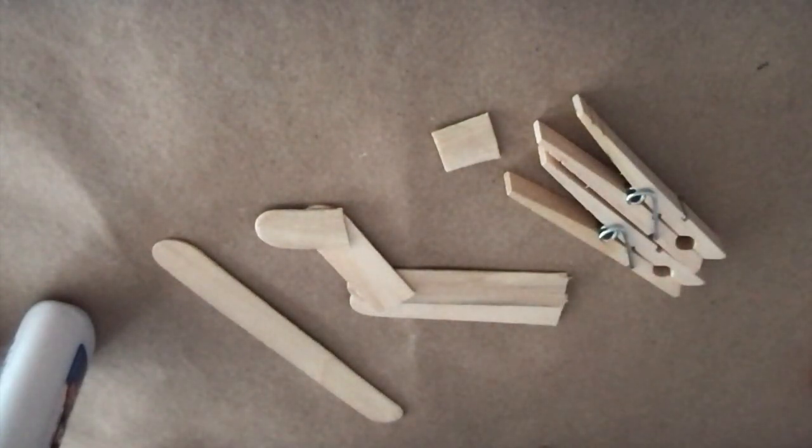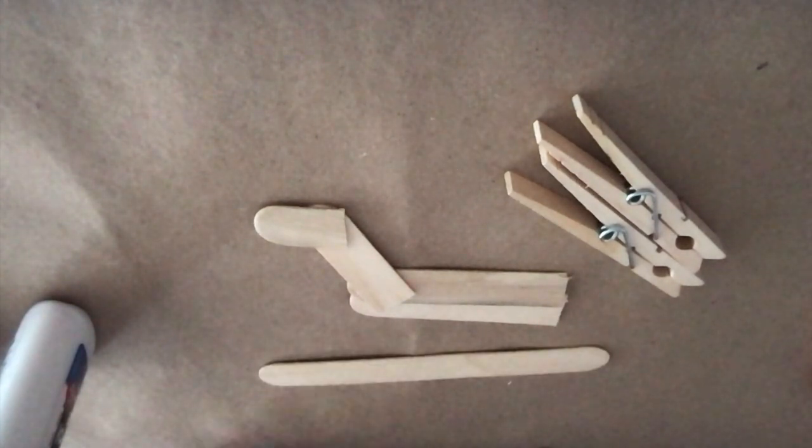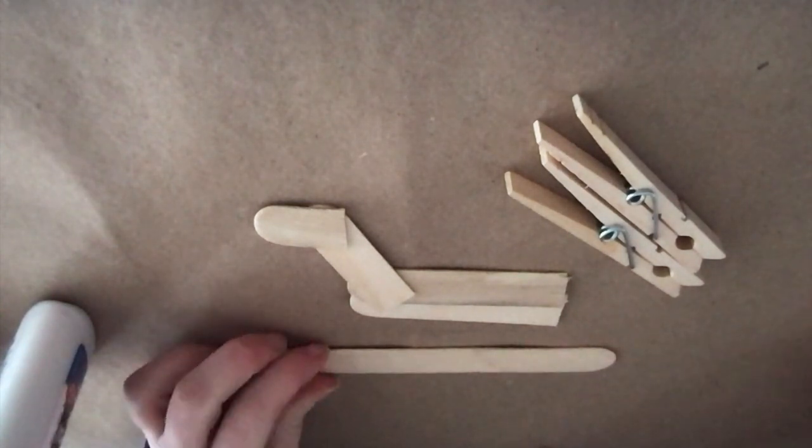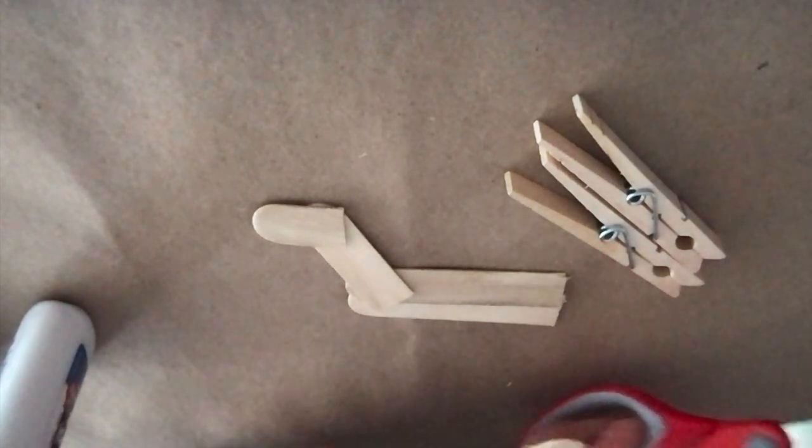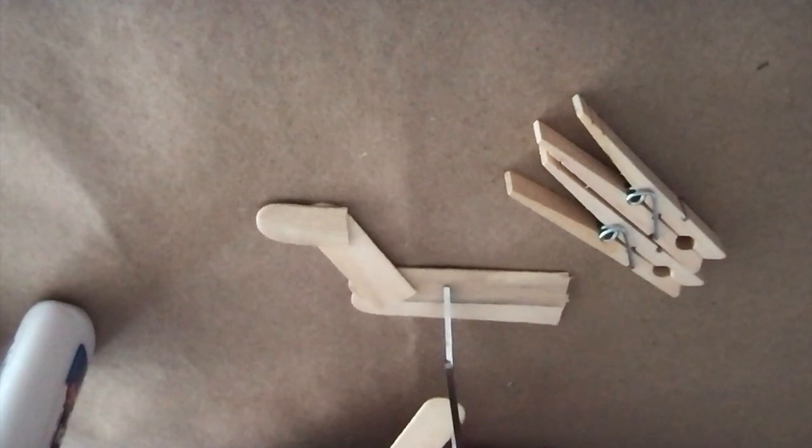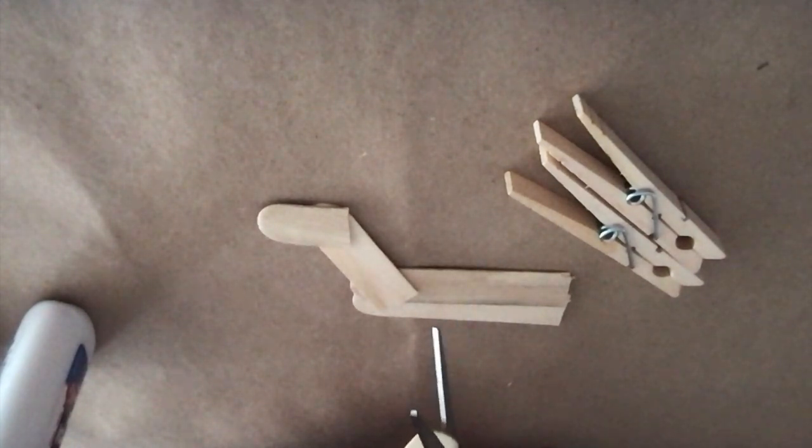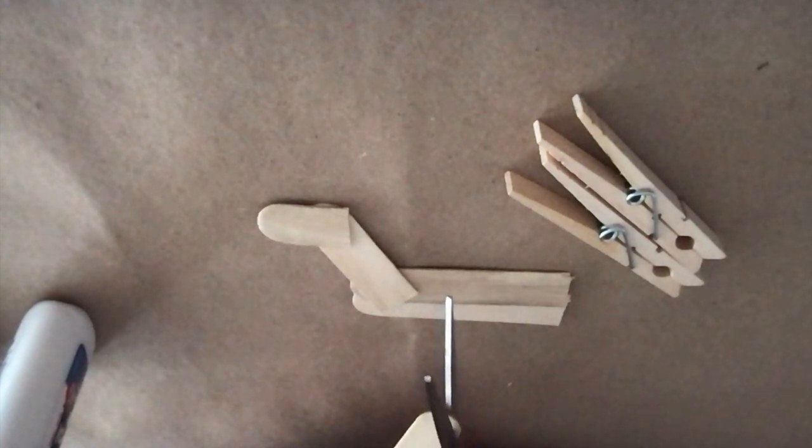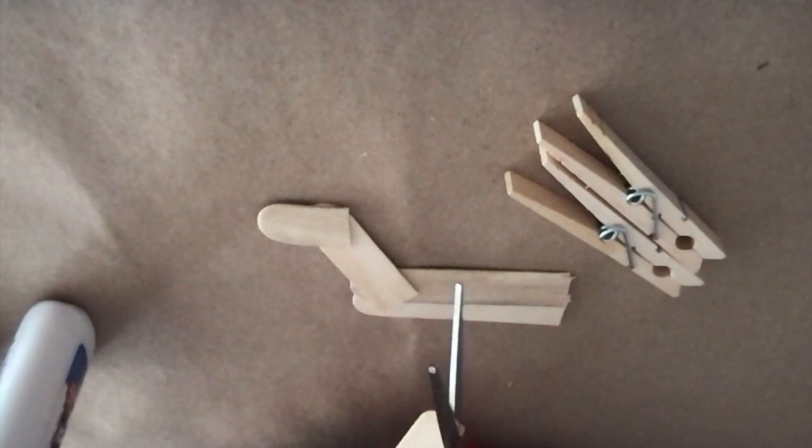So now what we'll have to do is make an ear and a tail for our horse. We have one full popsicle stick, so what I'm going to do is take this and just cut a corner of the popsicle stick to be our ear. You can try to make it triangle-like.